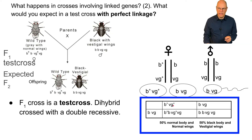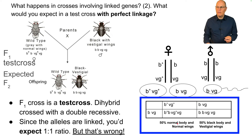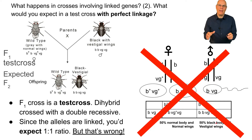Here's a Punnett square with the eggs on one side and all the sperm on the other. Putting them together, you'd expect that half the offspring would be B+B, VG+VG — having normal body and normal wings — and the other 50% would be BB, VGVG — having black body and vestigial wings. But that is not what actually happens. This is what you'd expect only if there were perfect linkage.